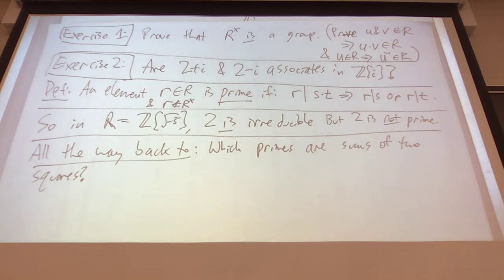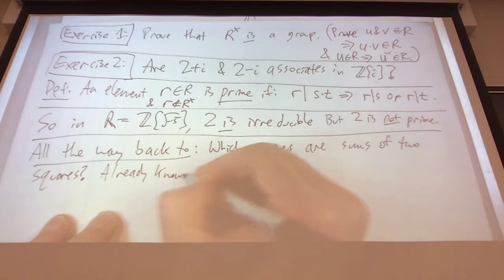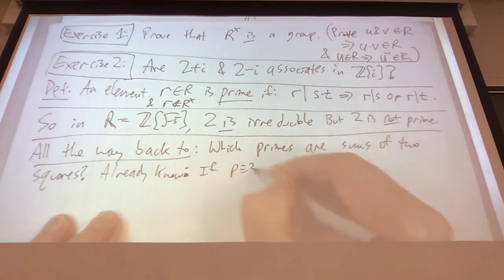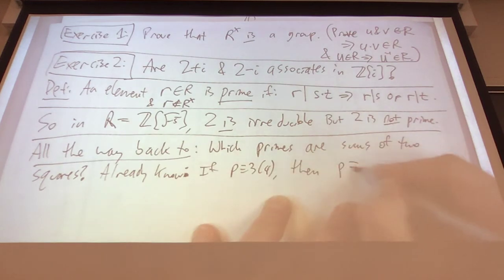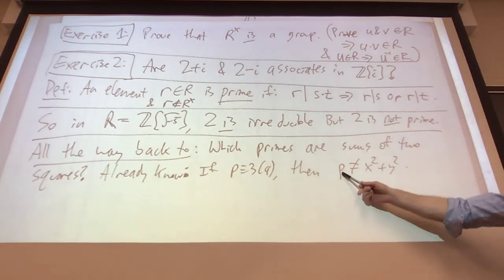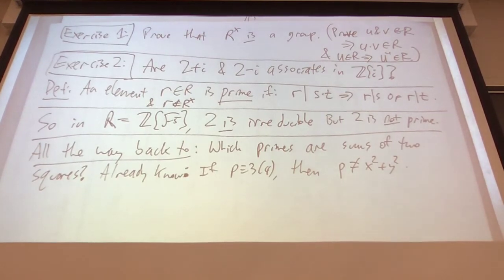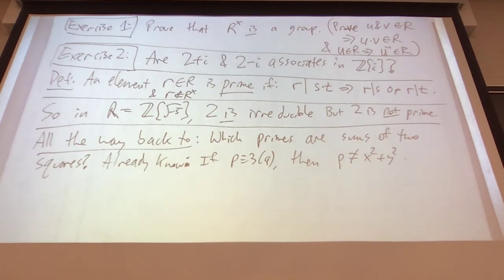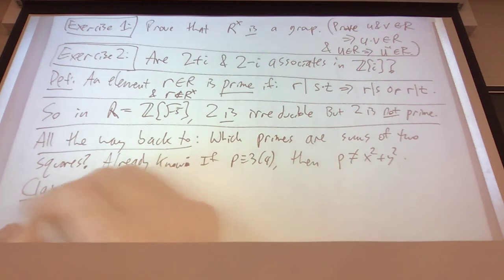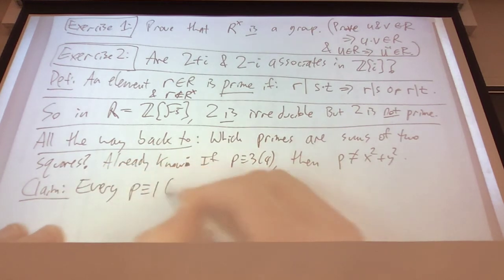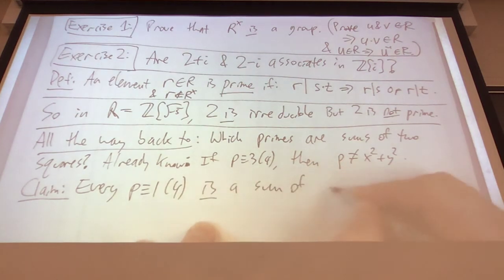We already know something. There are three kinds of primes: the prime 2, primes congruent to 3 mod 4, and primes congruent to 1 mod 4. We already know that if P ≡ 3 mod 4, then P is not a sum of two squares, because no number congruent to 3 mod 4 is a sum of two squares. We already proved that just by looking mod 4.